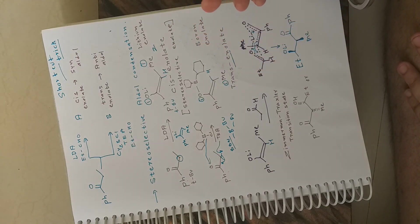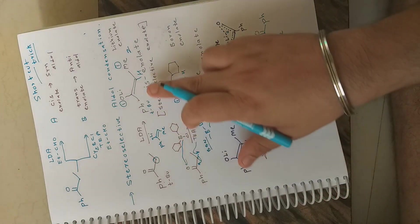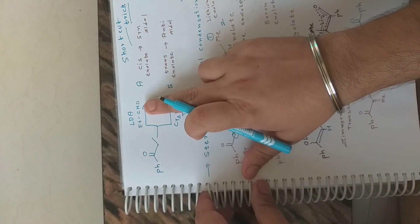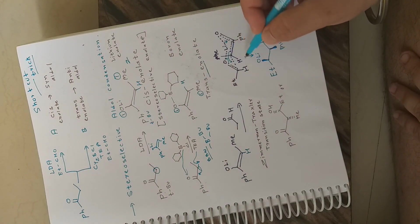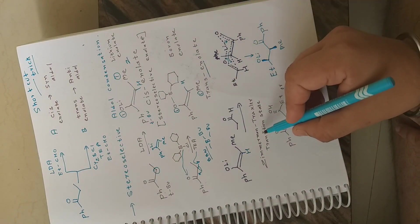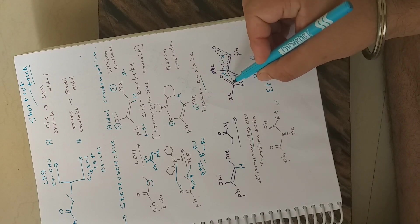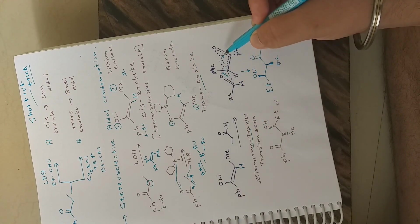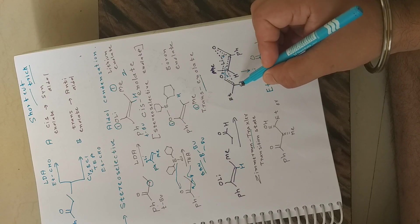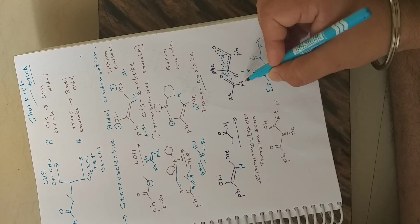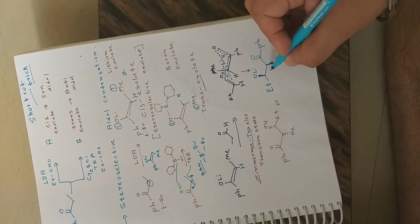The substrate is ethyl propanal (EtCHO). A six-membered chair transition state is drawn — this is the Zimmerman-Traxler transition state. The ethyl group is placed in the equatorial position because placing it axially would cause ethyl-phenyl repulsion. Therefore, this arrangement preferentially gives syn aldol product.